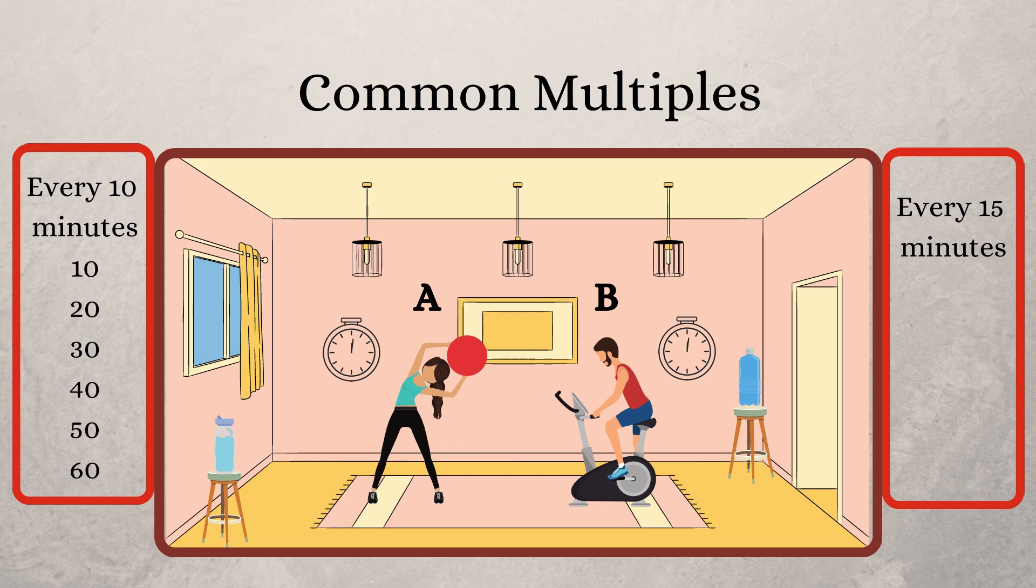So A drinks water at 10, 20, 30, 40, 50 and 60 minutes. And B drinks water at 15, 30, 45 and 60 minutes.